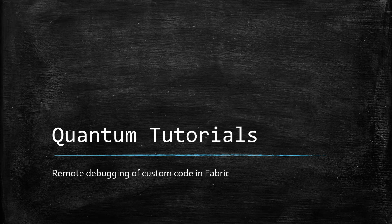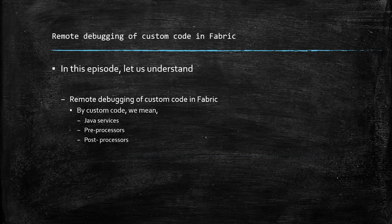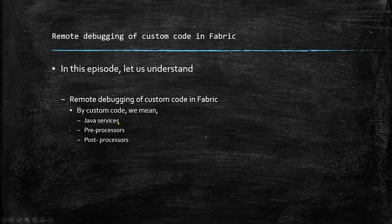Hello and welcome to one more episode of Quantum Tutorials. In this episode, we are going to look at how to do remote debugging of custom code in Fabric. By custom code, we mean the Java services that we write as part of the Fabric apps, and the pre-processors and post-processors that we create as part of the Fabric apps inside Fabric.